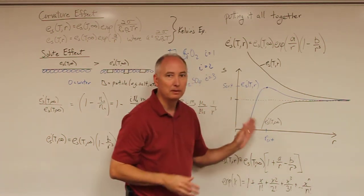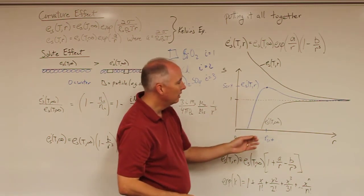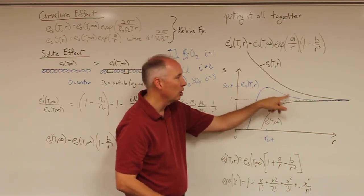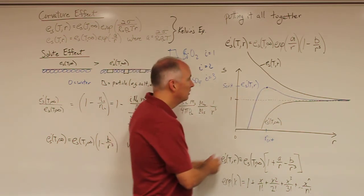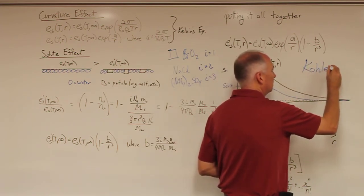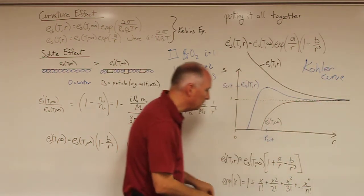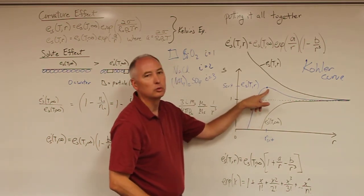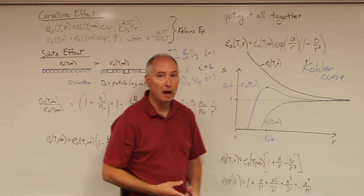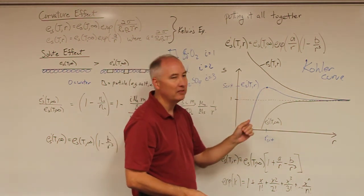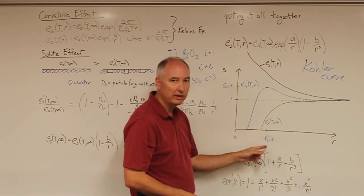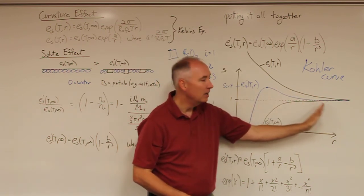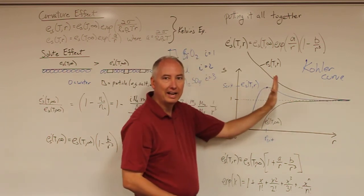We define any droplet that has a radius smaller than the critical radius — which is the inflection point in the Köhler curve — as a haze droplet. This is what we call the Köhler curve. Any droplet in the atmosphere with a radius less than the critical radius on the Köhler curve is referred to as a haze droplet, and any droplet with a radius greater than the inflection point on the Köhler curve is referred to as a cloud droplet. So that is the boundary between cloud droplets and haze droplets.